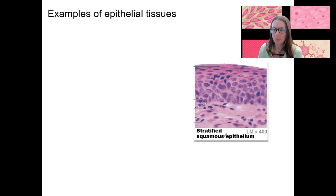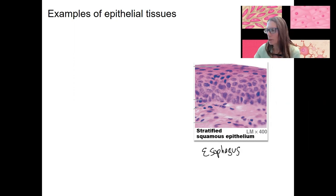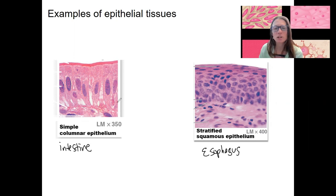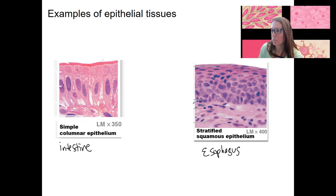Stratified squamous epithelium is actually found in the esophagus — an area that needs to be protected from things when you eat. Simple columnar epithelium is found in the intestine. These are two pretty different types: we've got a single layer of columnar cells versus multiple layers of short squamous cells, but they share some general features.